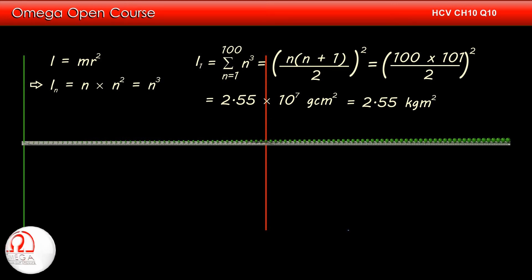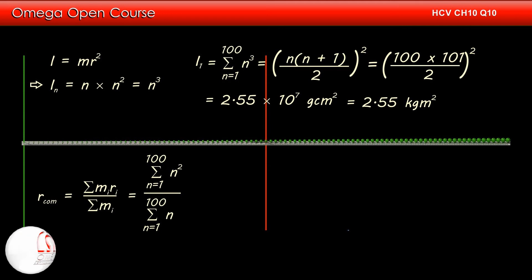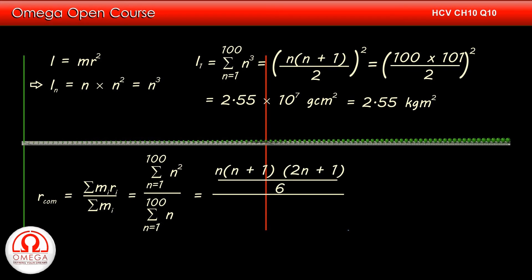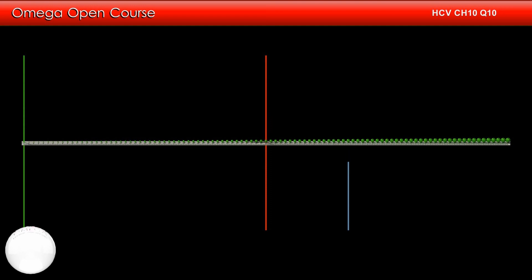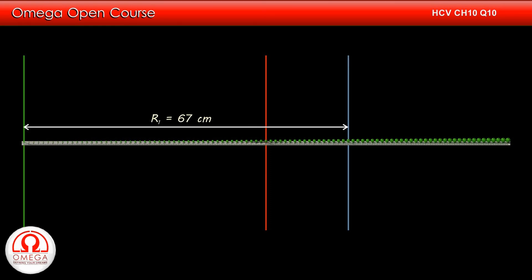So let's find the center of mass of the system. For the nth particle, mass is n grams and its distance from the left end is n centimeters. Position of center of mass is given by summation of mass into distance divided by total mass of the system. Thus the distance of center of mass from the left end is summation of n² divided by summation of n. Summation of n² is given by n(n+1)(2n+1)/6, and summation of n is n(n+1)/2. Simplifying, we get (2n+1)/3. Putting n = 100, we get 201/3 or 67 centimeters. Thus the axis passing through the center of mass is at a distance of 67 centimeters from the left end and at 17 centimeters from the perpendicular bisector.